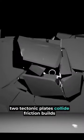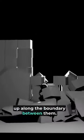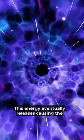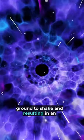When two tectonic plates collide, friction builds up along the boundary between them. This energy eventually releases, causing the ground to shake and resulting in an earthquake.